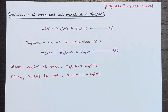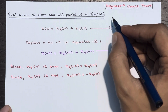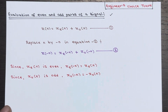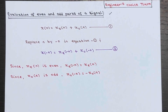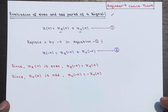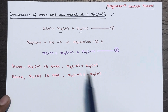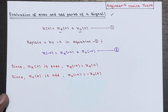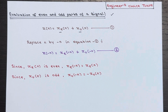Hello everyone. In today's lecture we are going to discuss the evaluation of even and odd parts of a signal. In the last lecture we saw that any discrete time signal x(n) can be expressed as a sum of even and odd components — even if a signal does not exhibit perfect symmetry or anti-symmetry, it can still be broken down into these two components. We also covered the formula to calculate the even and odd components of a signal, and here we are going to prove that.